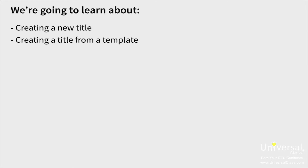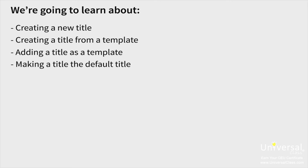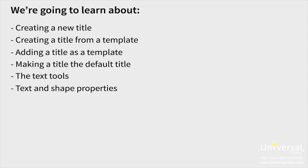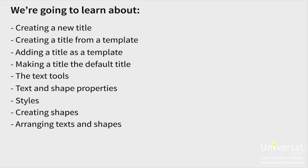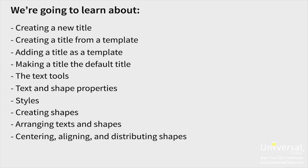In this lesson, we're going to learn about creating a new title, creating a title from a template, adding a title as a template, making a title the default title, the text tools, text and shape properties, styles, creating shapes, arranging texts and shapes, centering, aligning, and distributing shapes, adding a logo, and rolls and crawls. Since closed captioning is also another form of text that you can incorporate into your video projects, we'll discuss this as well toward the end of the lesson.